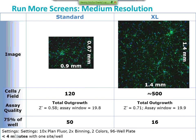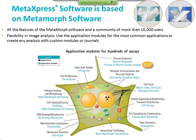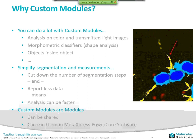Our analysis software MetaExpress is based on MetaMorph, and we have all the features of MetaMorph software embedded in MetaExpress, enabling hundreds of applications. One of the new features is the ability to generate custom application modules, not just the pre-built ones. Custom modules allow you to analyze color transmitted light images, perform morphometric classifiers and shape analysis, and critically analyze objects inside objects — for example, counting dots inside neurites. You can also use them to reduce the number of segmentation steps and run them in our high-throughput analysis tool MetaExpress PowerCore.